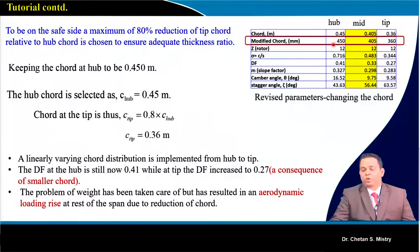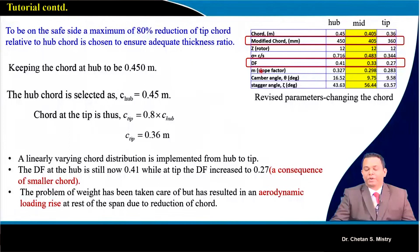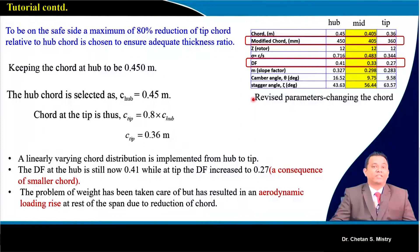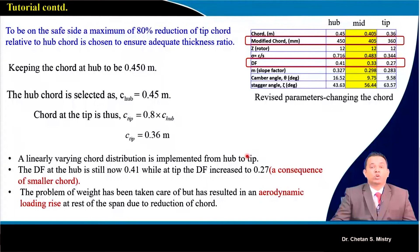This gives a chord distribution of 450 mm at the hub, 405 mm at the mid station, and 360 mm at the tip. When we modify the chord, the diffusion factor also changes. The diffusion factor at the hub remains 0.41, while near the tip it becomes 0.27. Modifying the chord to address weight creates a challenge with aerodynamic loading, which we now need to address.